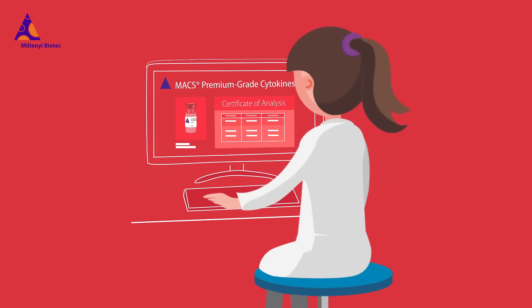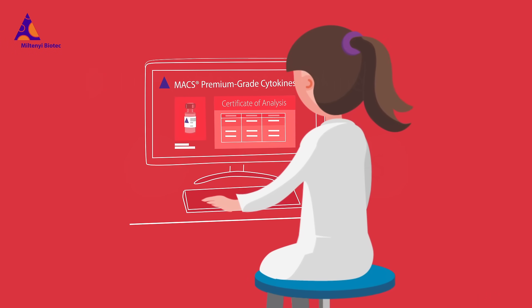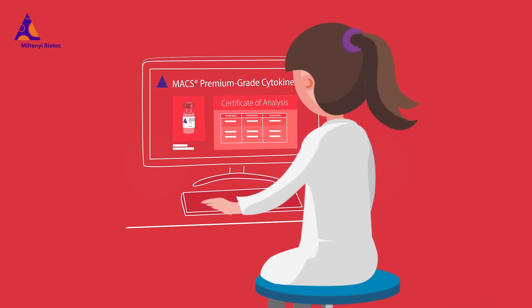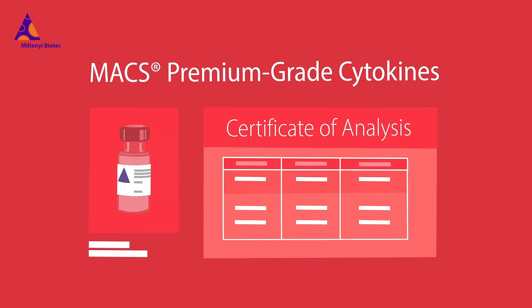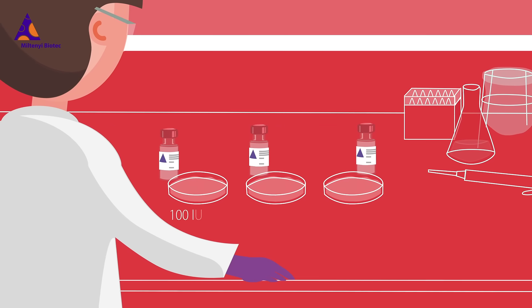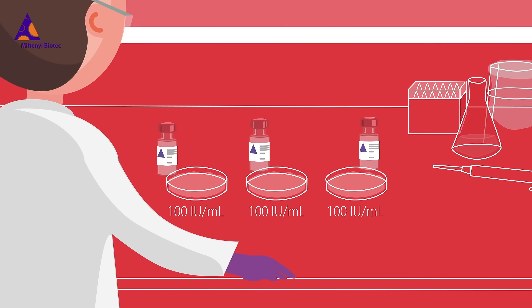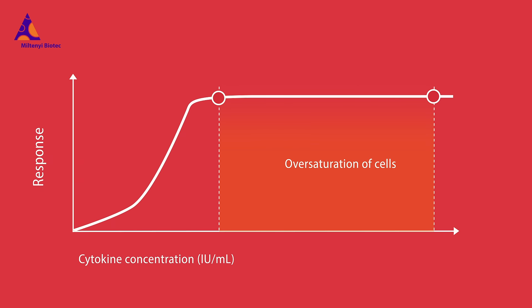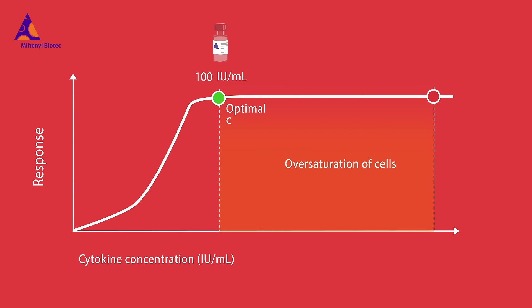With max premium grade cytokines, you get lot-specific cytokine activity because the testing has already been done for you. Relying on this information, you can always add the same amount of active cytokine to your experiment, allowing you to rule out any kind of variability — moving a huge step closer to reproducible cell culture results.